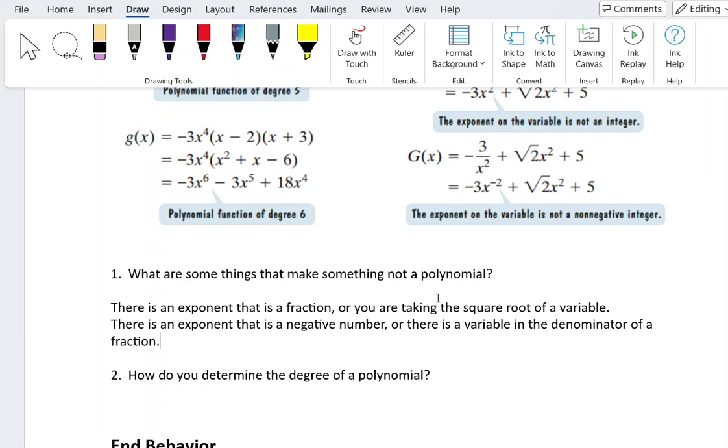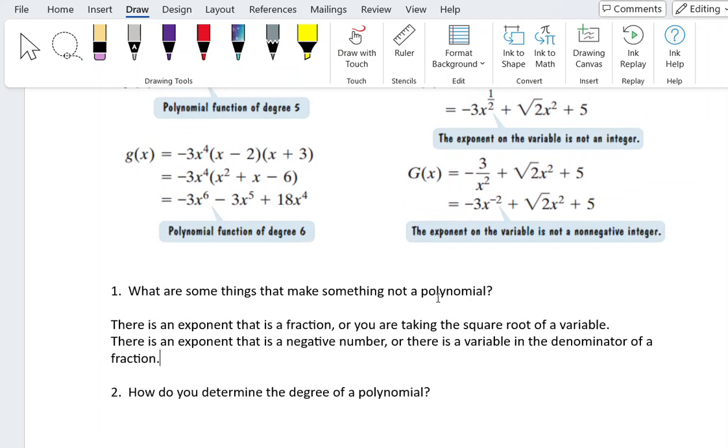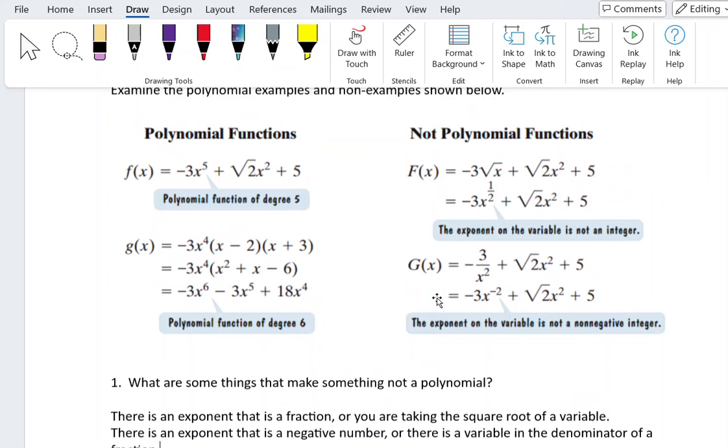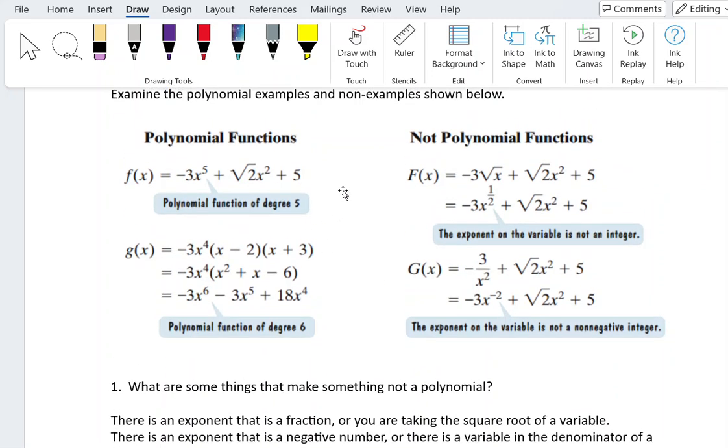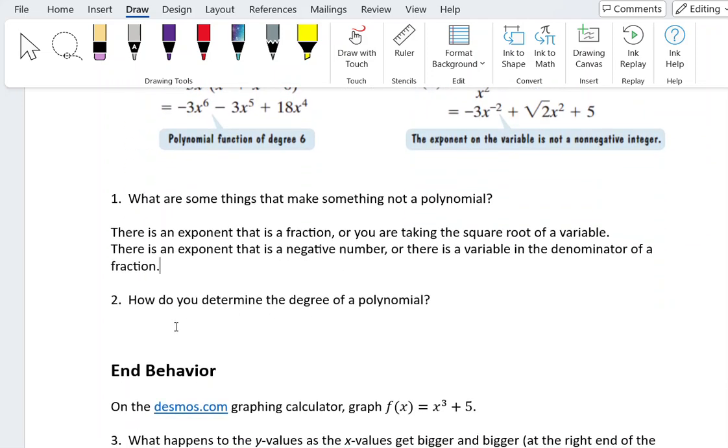The second question is how do you determine the degree of a polynomial? Well, we mentioned this a little bit in an earlier week. But when we look at these examples, we have this one which is degree 5, and we see that 5 is the largest exponent in the polynomial. This one is degree 6, and we see that 6 is the largest exponent in the polynomial. So the degree is the largest exponent in the polynomial.